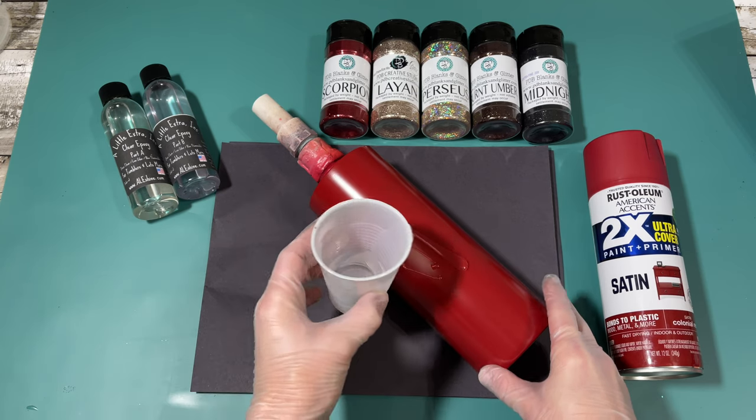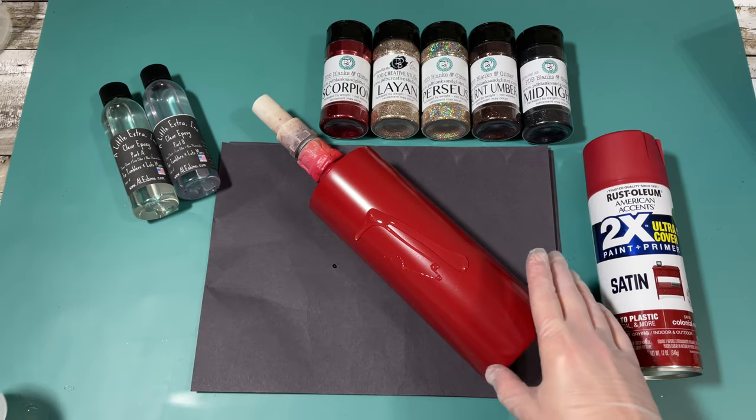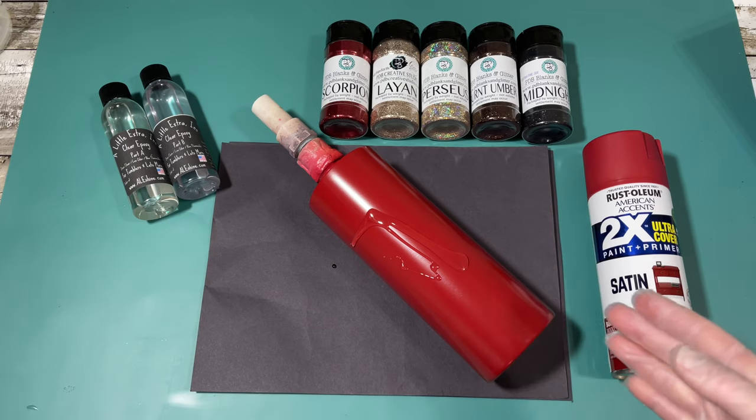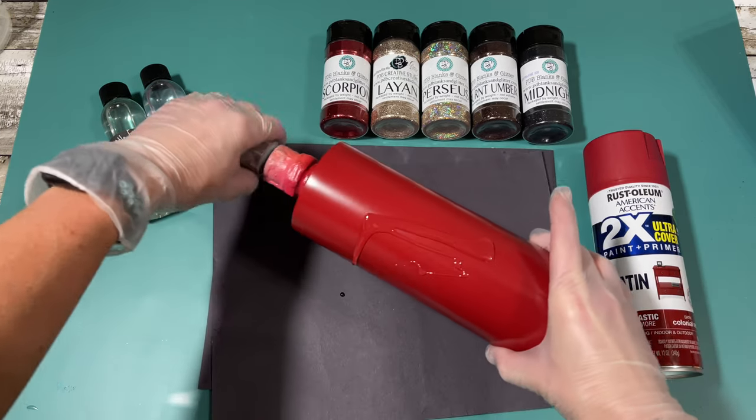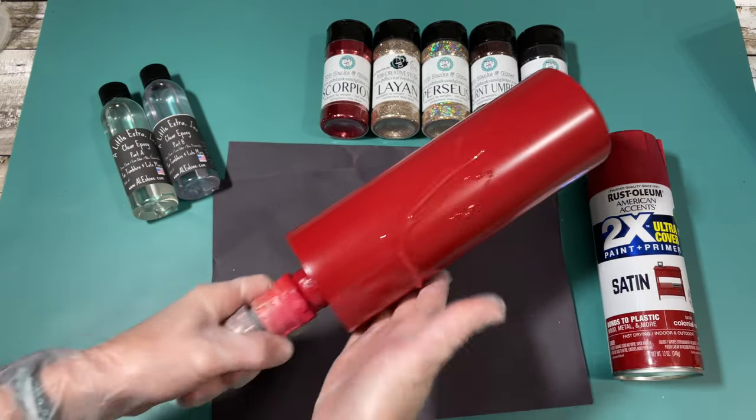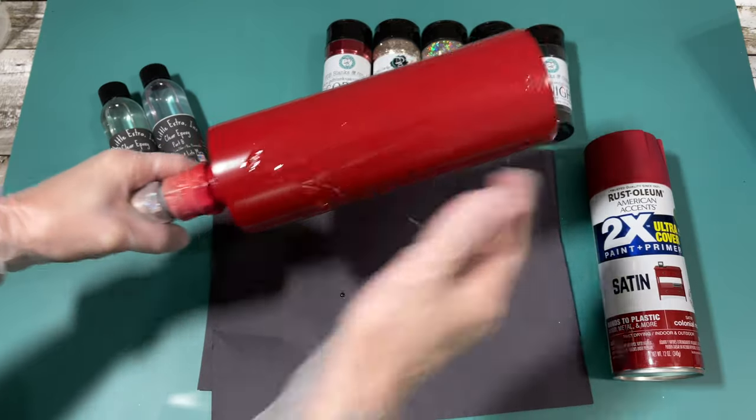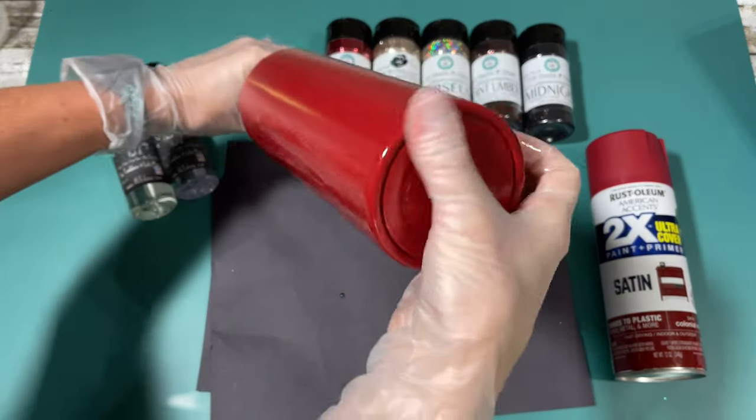The tumbler that we are using is a 24-ounce plump from The Steel Magnolia. It is a straight tumbler, so it is perfect for us to do a full water slide once we glitter and epoxy.